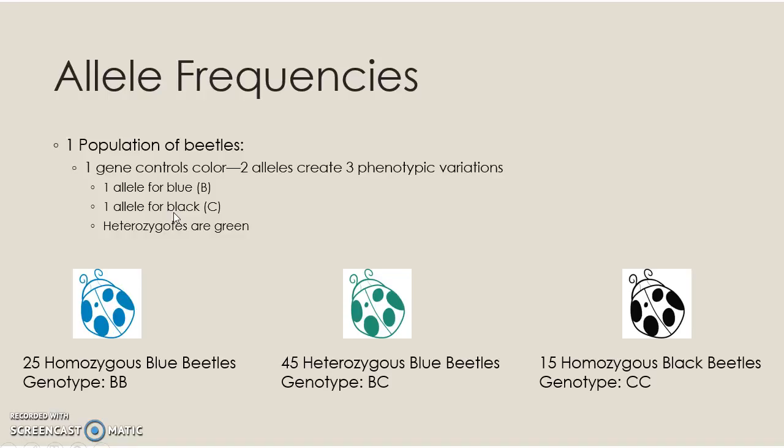There's one allele that dictates black color — that is the C allele. There are 15 little beetles with genotype CC that appear black. Heterozygotes — beetles with the B allele and the C allele — appear green in this population. There are 45 little green beetles with genotype BC. This is the population we're looking at when we calculate allele frequency.